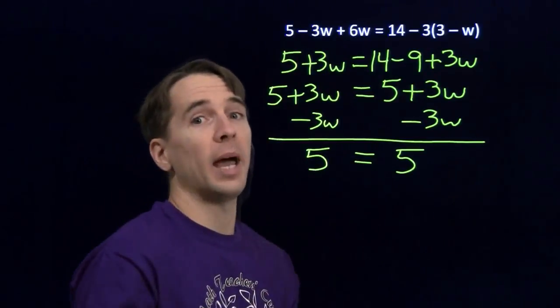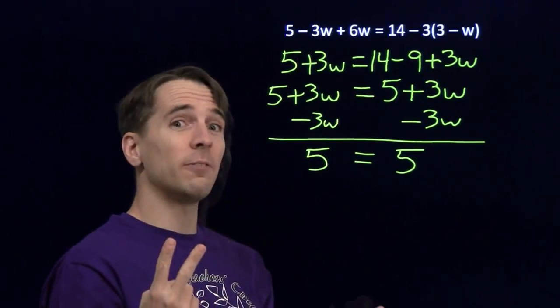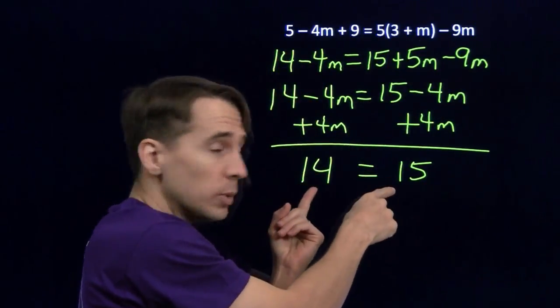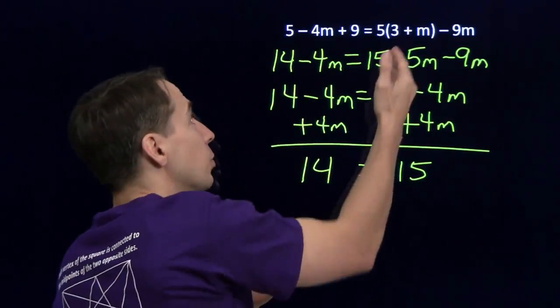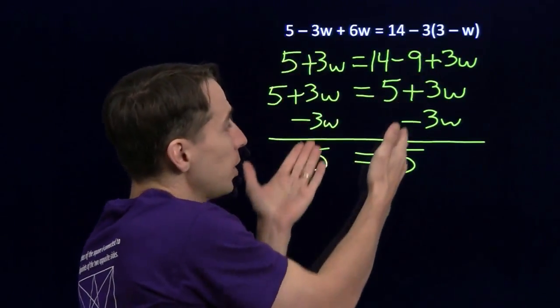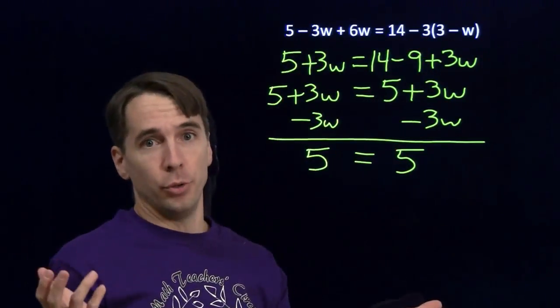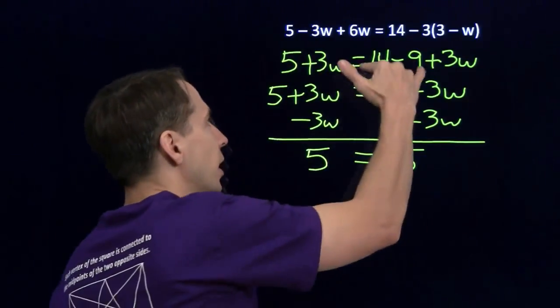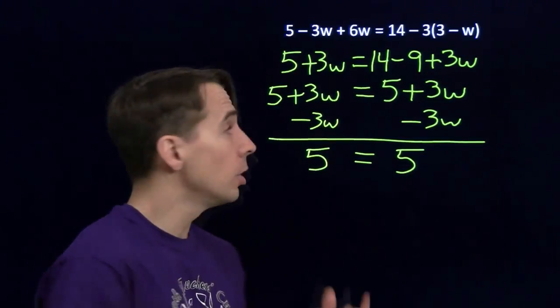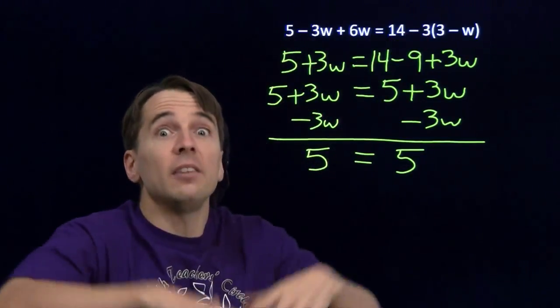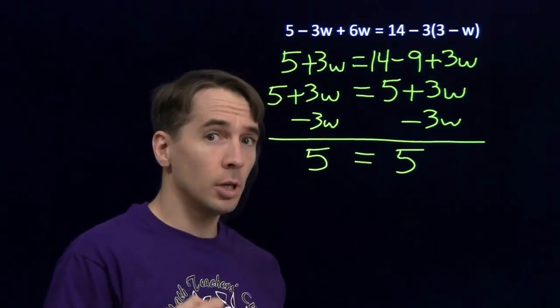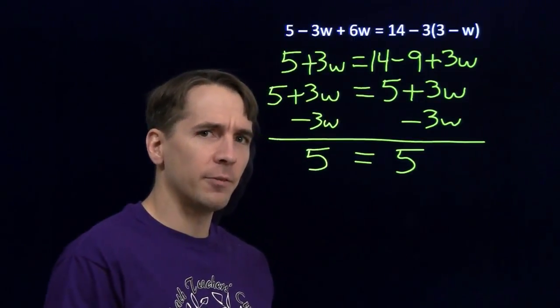So to recap, we've seen linear equations from way back. They all seem to have one solution. Well, now we've seen two different new kinds of equations. First, if we simplify both sides of the equation, we get down to something that's never true. That tells us the original equation has no solutions at all. If we simplify the equation, we get to an equation that is always true. That tells us that every value of the variable works in the equation. So linear equations can have no solutions, they can have exactly one solution, or they can have infinitely many solutions. But are there any other possibilities? Can a linear equation have just two solutions, just three solutions? I'll let you figure that out for yourself.